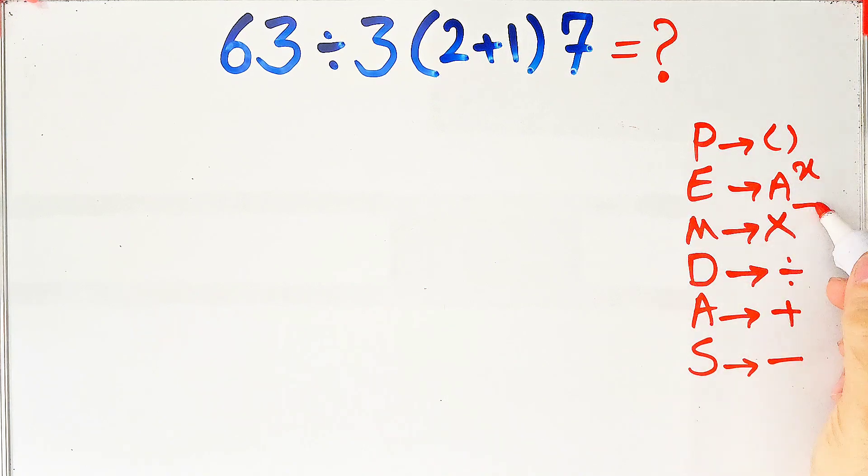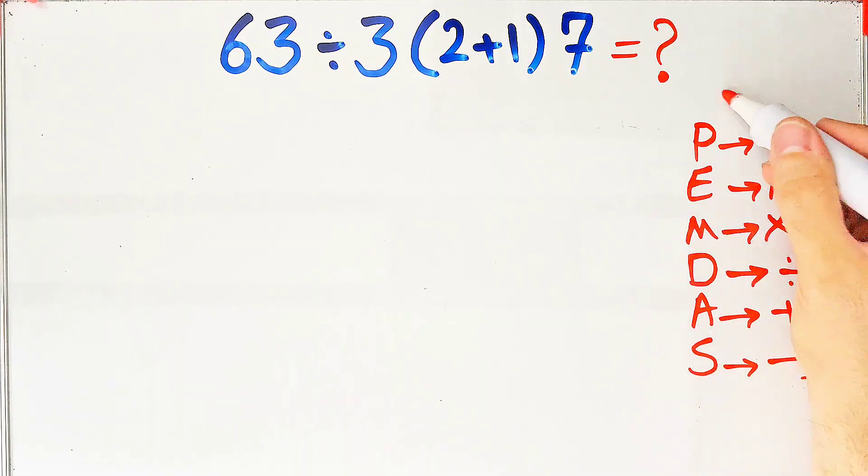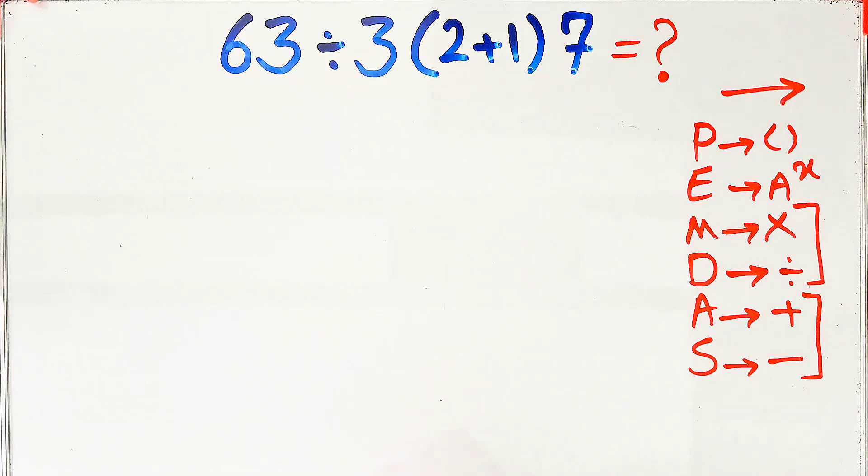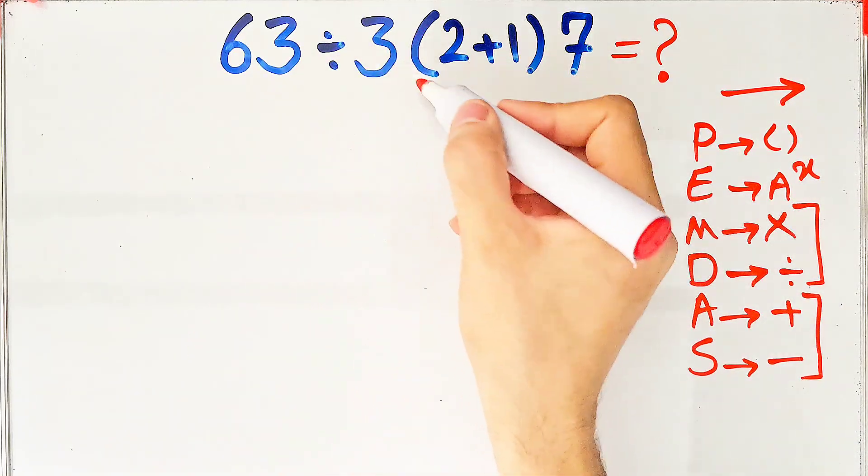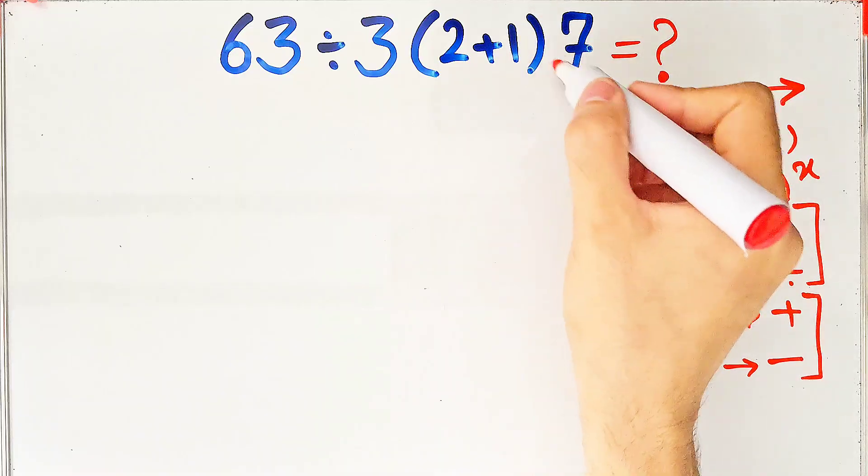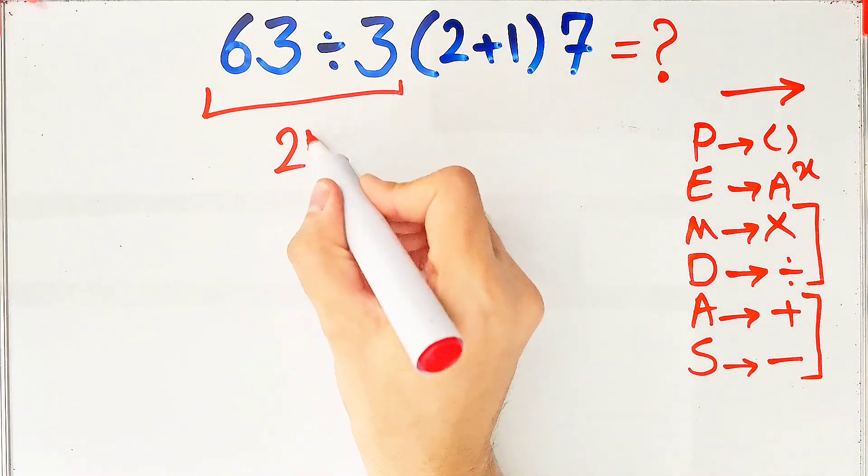Multiplication and division have the same level of priority; also, addition and subtraction have the same priority. When we have both in an expression, we start from the left and simplify. After we simplify the parentheses, in this question we have multiplication and division. And because multiplication and division have the same level of priority, we start from the left and simplify.